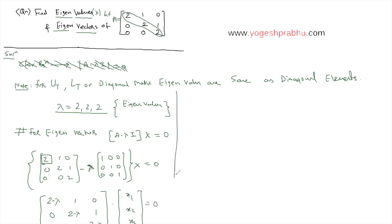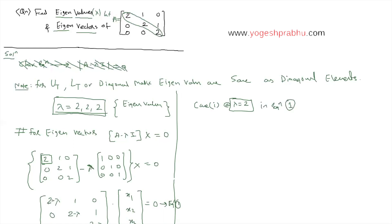Now, let's work with Case 1: lambda equals 2, since all our eigenvalues are 2. Substituting lambda = 2 into equation 1, the diagonal values become 2 minus 2 = 0. Rewriting the matrix equation, the diagonal entries are all 0, and the off-diagonal entries remain: row 1 is [0, 1, 0], row 2 is [0, 0, 1], row 3 is [0, 0, 0]. So the matrix equation is: [0,1,0; 0,0,1; 0,0,0] times [X1; X2; X3] = 0.